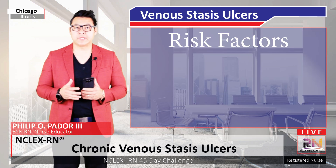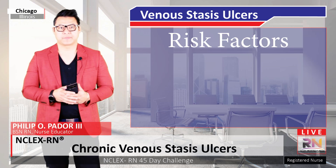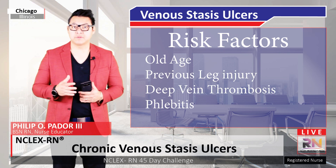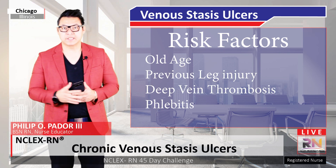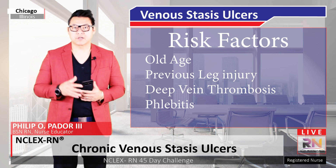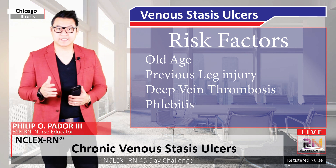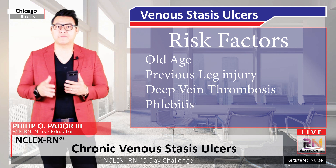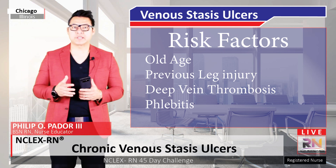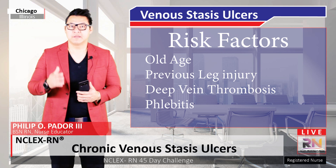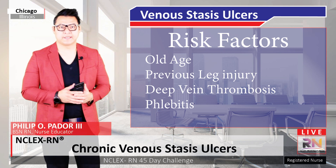Let's talk about the common risk factors that can lead to venous ulcers. Higher risk factors include old age, previous leg injuries, deep venous thrombosis or blood clots in the legs, and phlebitis, which is an inflammation of the vein, usually in the lower extremities. Venous ulcers are also more common in women than in men.